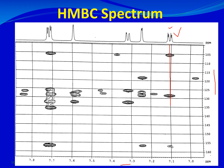Drawing a line down from the 7.1 ppm proton, it passes through three contours. The first contour meets the carbon scale at about 105–106 ppm, the second at about 128 ppm, and the third at about 157 ppm. This means the proton resonating at 7.1 ppm has three carbons nearby: one at 105, one at 127, and one at 157 ppm.